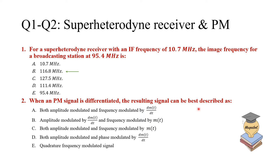For question two, you need to write the equation for the PM signal and then differentiate it. The correct answer is A — both amplitude modulated and frequency modulated, in the two cases by dM/dt. Now let's move to the third question.